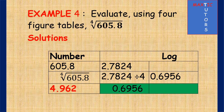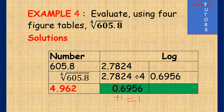Example 4 also has to do with roots: the fourth root of 605.8. The fourth root means the number you multiply by itself 4 times to give 605.8. 605.8 has 3 digits: 3−1=2, so characteristic is 2. From the four-figure table, 60 under 5, difference 8, gives 2.7824. Because it is fourth root, we divide 2.7824 by 4, giving 0.6956. Add 1 to the characteristic 0, giving 1. From the antilog table, 69 under 5, difference 6, gives 4962. Because the characteristic is 1, put the decimal after the first digit, so your answer is 4.962.